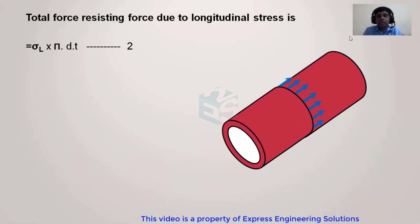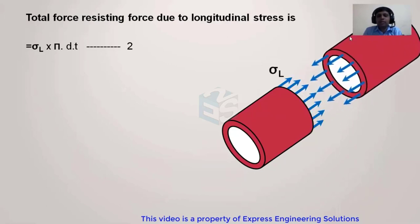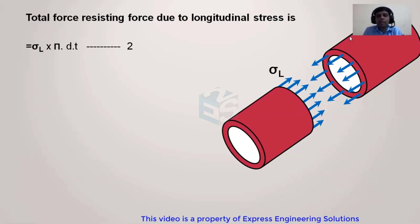To resist this splitting force, a reaction force is generated from the body. When the cylinder fails, it splits into two halves, and the longitudinal stress σL is generated, acting on the cross-sectional area of the cylinder material. That cross-sectional area is π/4 × (OD² − ID²), or using mean diameter: π × d × t, where d is the inside diameter for a thin cylinder and t is the thickness.